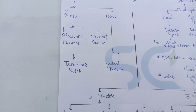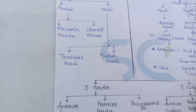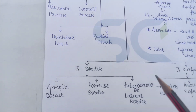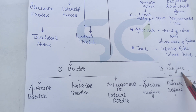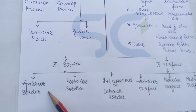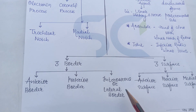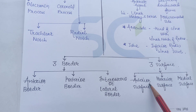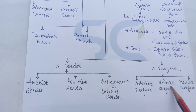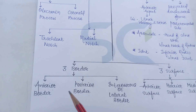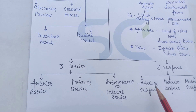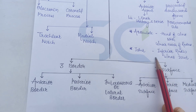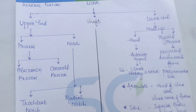The ulnar notch is present on the radius. In the shaft, there are three borders and three surfaces: anterior border, posterior border, and the interosseous or lateral border. The surfaces are the anterior surface, posterior surface, and the medial surface. Anterior and posterior borders and surfaces are common naming terms.